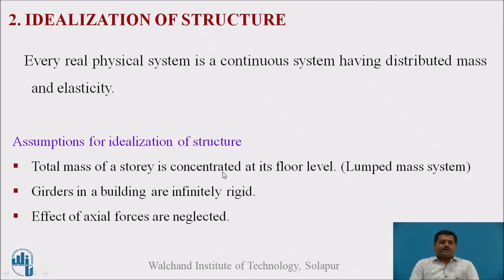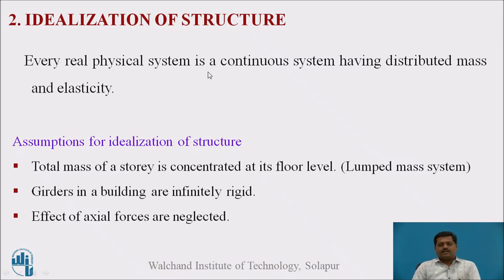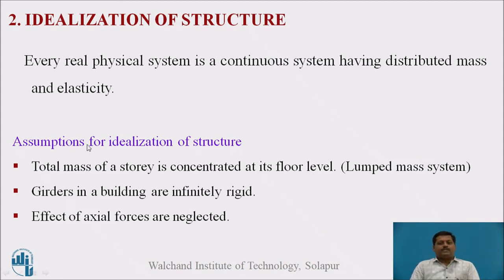Now let us see the idealization of the structure — how the structure is idealized as a damped free vibration system. Every real physical system is a continuous system having distributed mass and elasticity, because the structure is made with small elements, small particles, and molecules of materials. The assumptions made for idealization are: first, the total mass of the storey is concentrated at its floor level — this is a lumped mass system where the entire mass is concentrated at the centre of gravity of the floor.